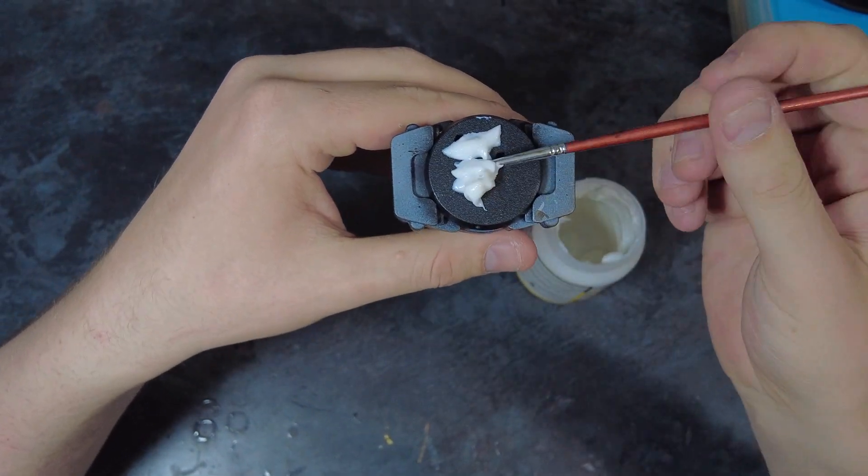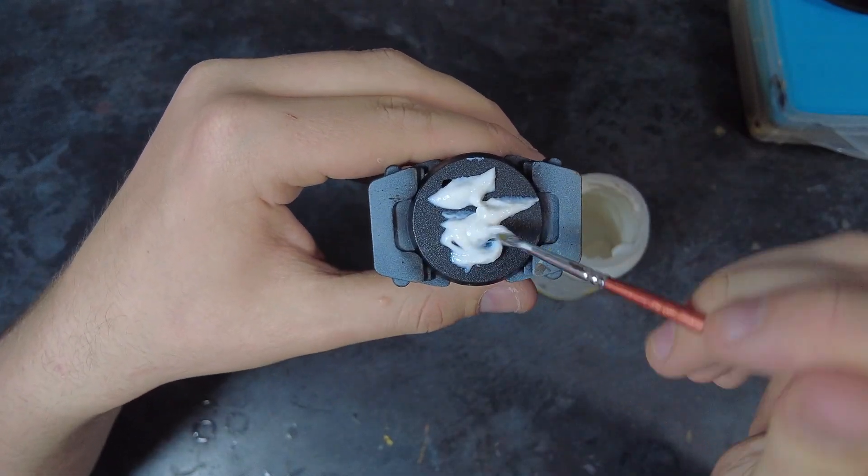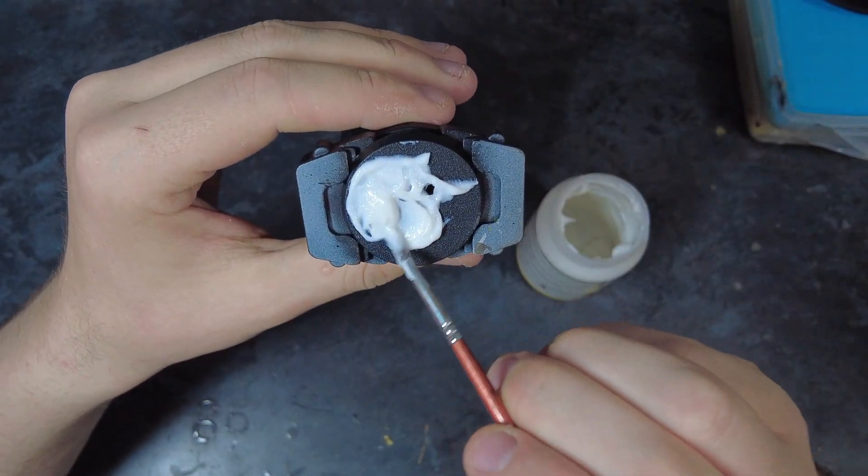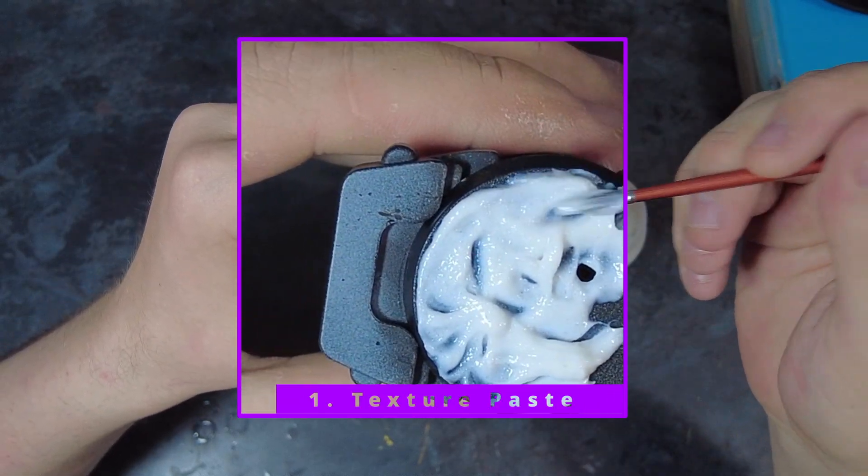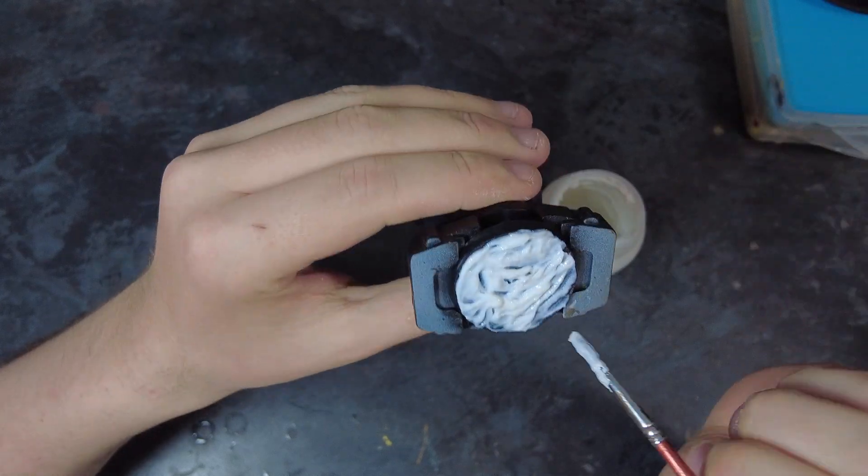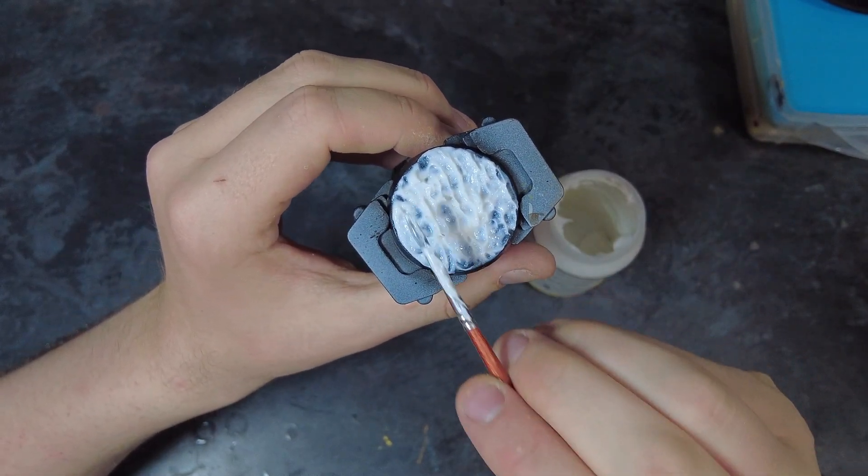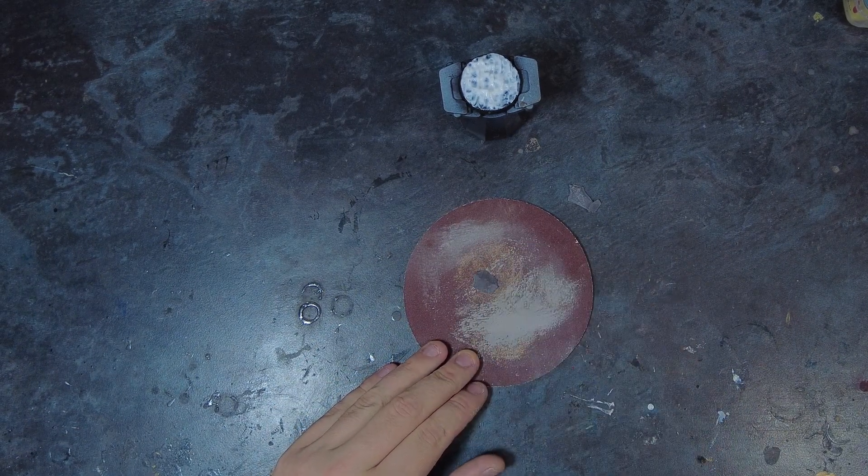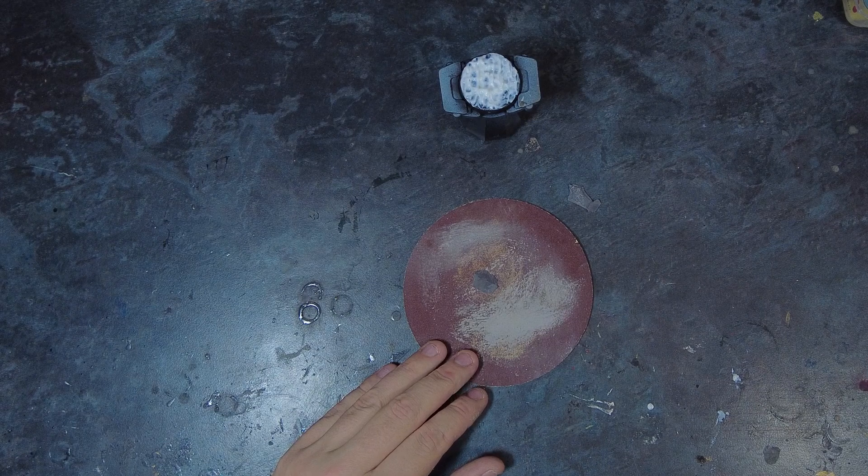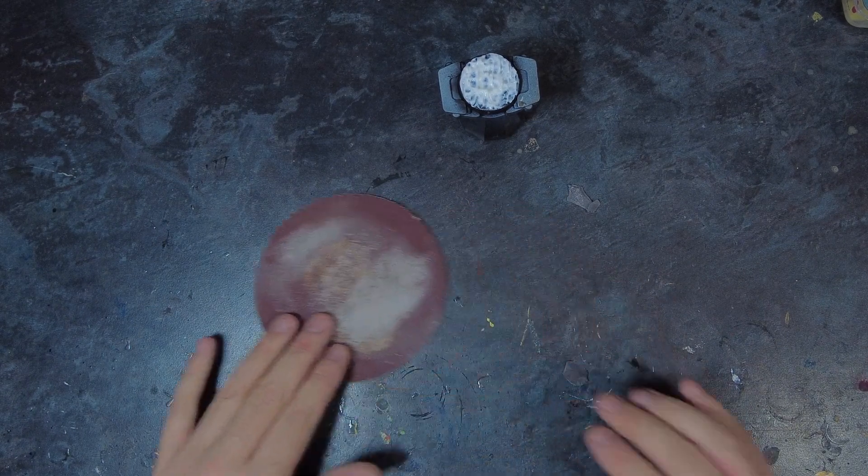We can move on to the building of the base, and here we want to start by applying a medium thickness layer of the texture paste across the entirety of the base. This should help to make sure that the texture is consistent across the whole base itself, and we won't have any large or small areas that don't match the overall sandy texture that we're going for.